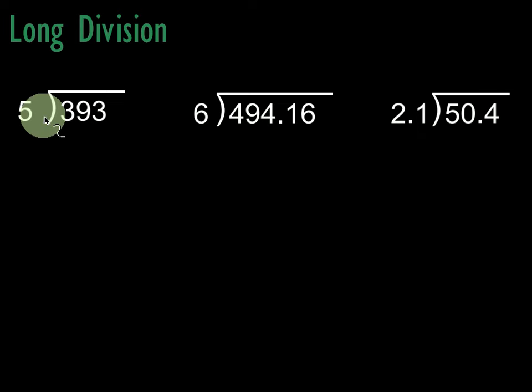What we're going to do is see what we need to multiply 5 by to get a number sitting right here, taking it a digit at a time. 5 doesn't go into 3, but if we go to the next digit, we've got 39. Now, 5 times 7 gets us 35. We're going to take 5 times 7, which is 35, and put it right below here. Then we're going to subtract.